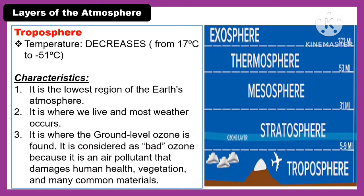The first layer of the atmosphere is the troposphere. The temperature in the troposphere decreases from 17 degrees Celsius to negative 51 degrees Celsius. Characteristics of the troposphere: it is the lowest region of the Earth's atmosphere, it is where we live and most weather occurs, and it is where ground-level ozone is found. This is considered bad ozone because it is an air pollutant that damages human health, vegetation, and many common materials.